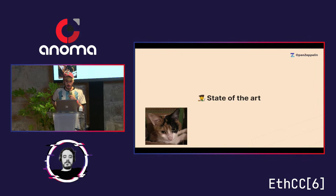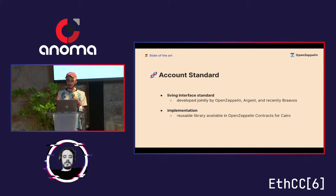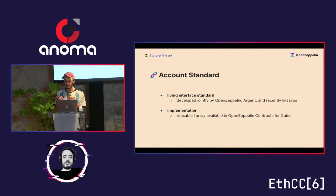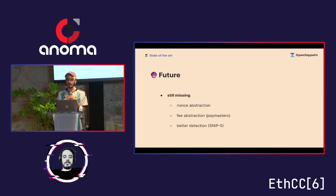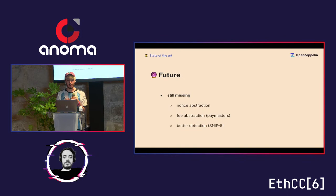So, the state of the art. Right now there's a living standard still in development, being developed jointly by OpenZeppelin, Argent, and recently Braavos also joined the discussion. We have a standard implementation in the OpenZeppelin Contracts for Cairo library that you can use for development, deploy directly, or extend to build your own account contracts. We are still missing, at the network level, nonce abstraction — at this point it's still sequential and managed by the protocol. We don't have fee abstraction at the protocol level yet; there is an app-level implementation of Paymasters, but it's not at the protocol level. And we are still working on improving the account detection mechanism. Today we use SNIP-5, which is like ERC-165 for introspection, but we are discussing whether it makes sense to have a protocol-level mechanism to ask a contract whether it is an account.